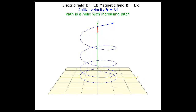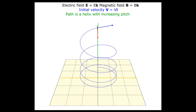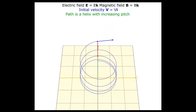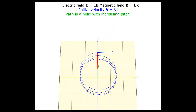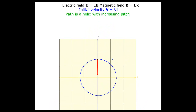The projection of the path in the x-y plane is a circle — this would have been the path if the electric field did not exist. So the motion along the z-direction due to the electric field is superposed over the circular motion in the x-y plane.